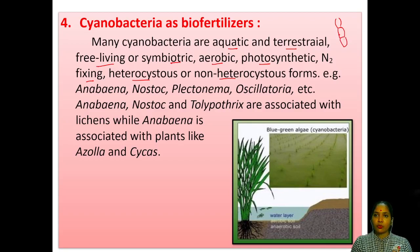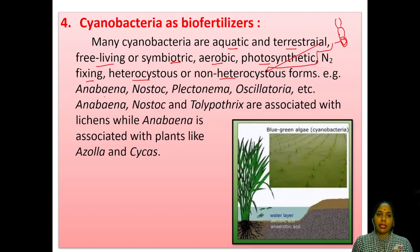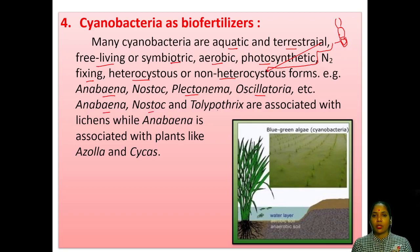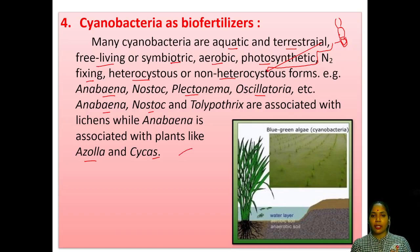The microorganisms in active compost keep multiplying on use — they are not dead but are still active. This is a good advantage. Another example is cyanobacteria as a bio-fertilizer. Many cyanobacteria are aquatic in habitat, and there are also terrestrial forms. They are free-living, symbiotic, aerobic, photosynthetic, nitrogen-fixing, and can be heterocystous or non-heterocystous forms. The more variety available, the more uses. If the bacteria are photosynthetic, they can charge up themselves — a great advantage.